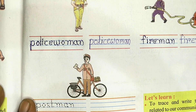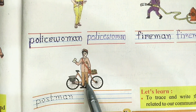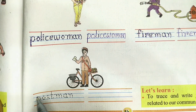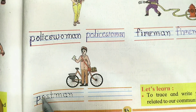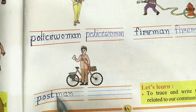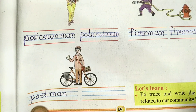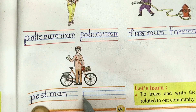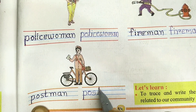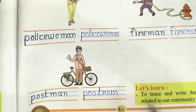F-I-R-E-M-A-N. Fireman. Now see the last picture. Who is this? This is postman. So first of all, we will trace the spelling of postman. P-O-S-T-M-A-N. Postman. Now we will write here. P-O-S-T-M-A-N. Postman.